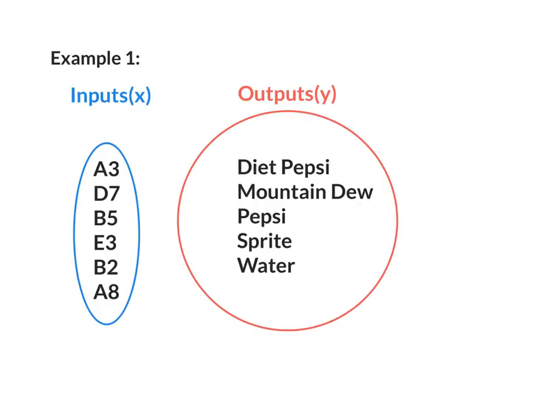Example 1 demonstrates this very well. Think of a vending machine. My inputs are my buttons. If I press A3, I'm going to get a Diet Pepsi. If I press D7, I'm going to get a Mountain Dew. If I press B5, I'm going to get a Pepsi. If I press E3, I'm going to get a Sprite. If I press B2, I'm going to get a Water. If I press A8, I'm also going to get a Water.